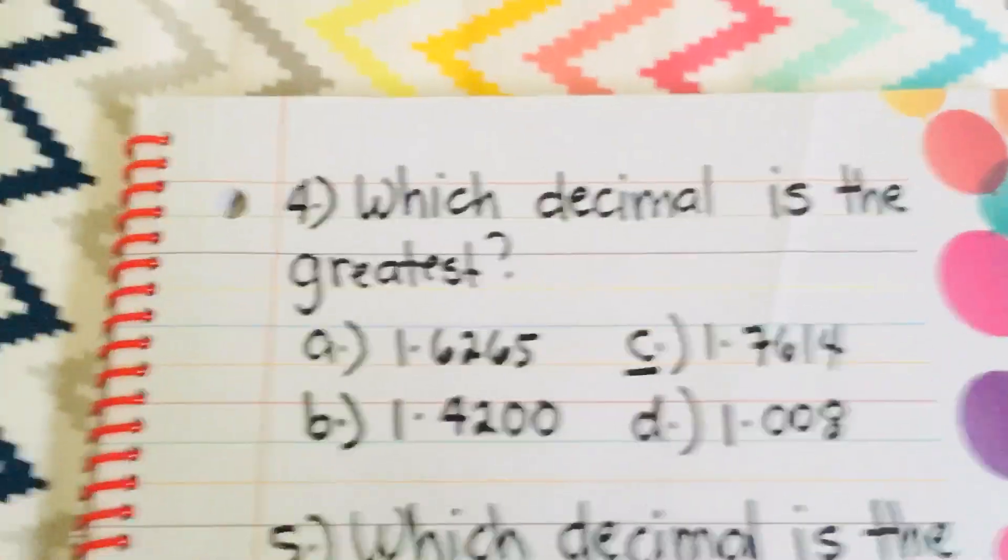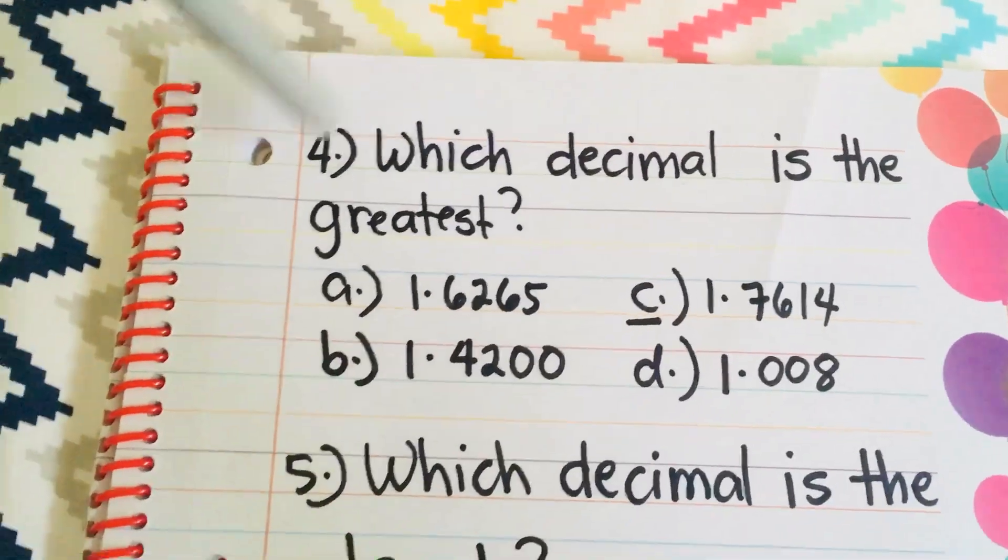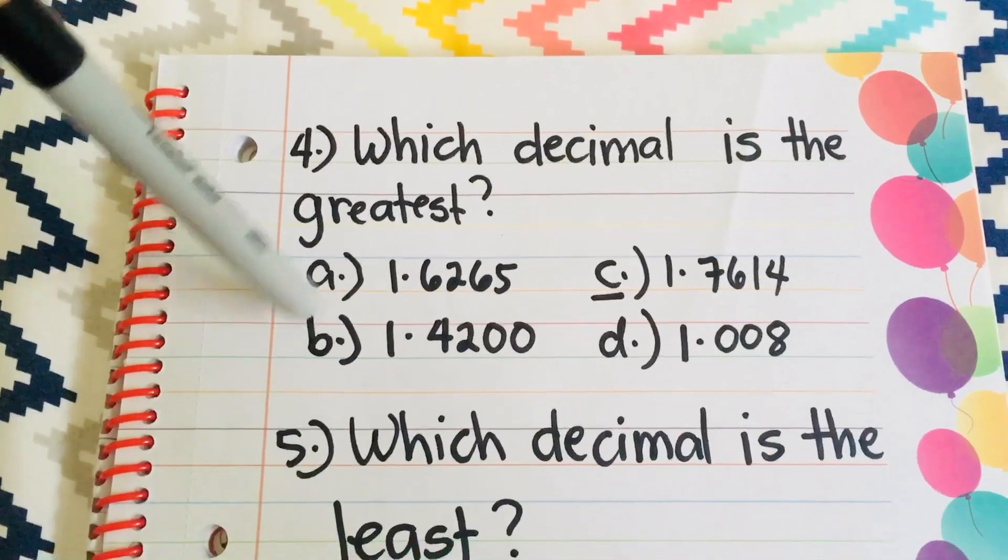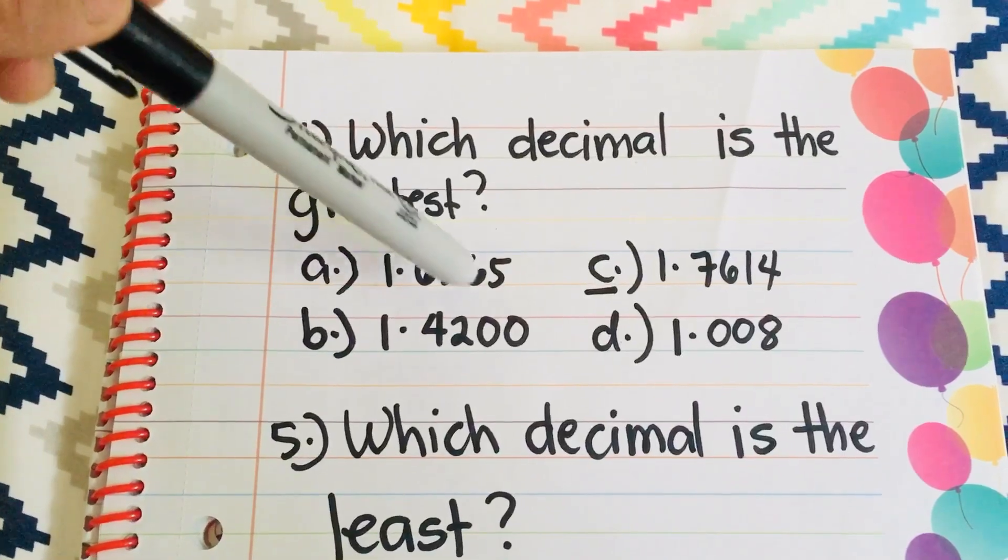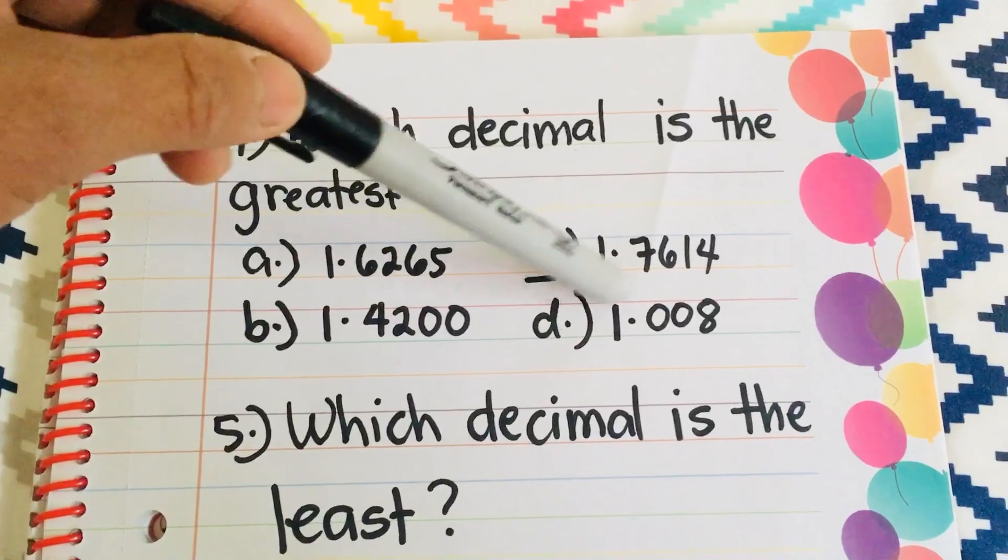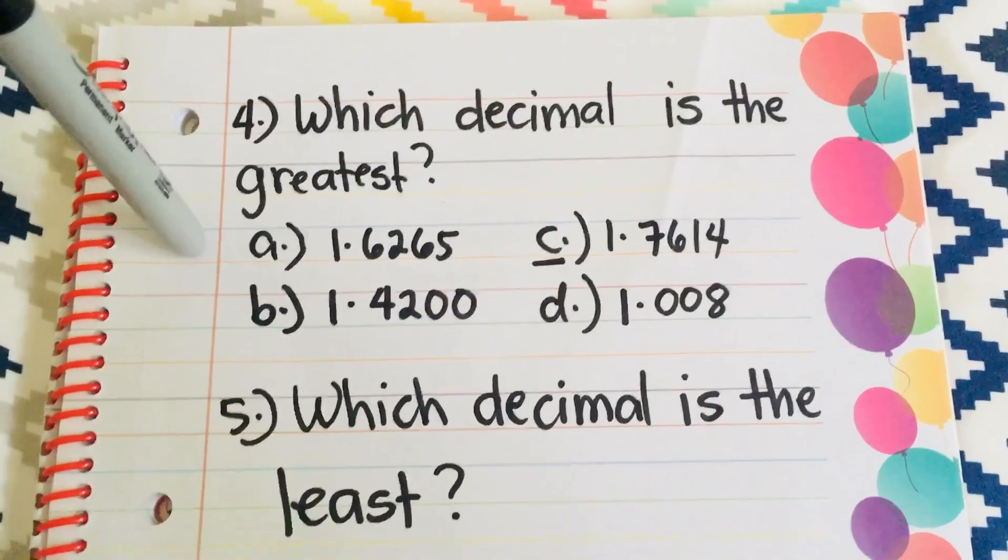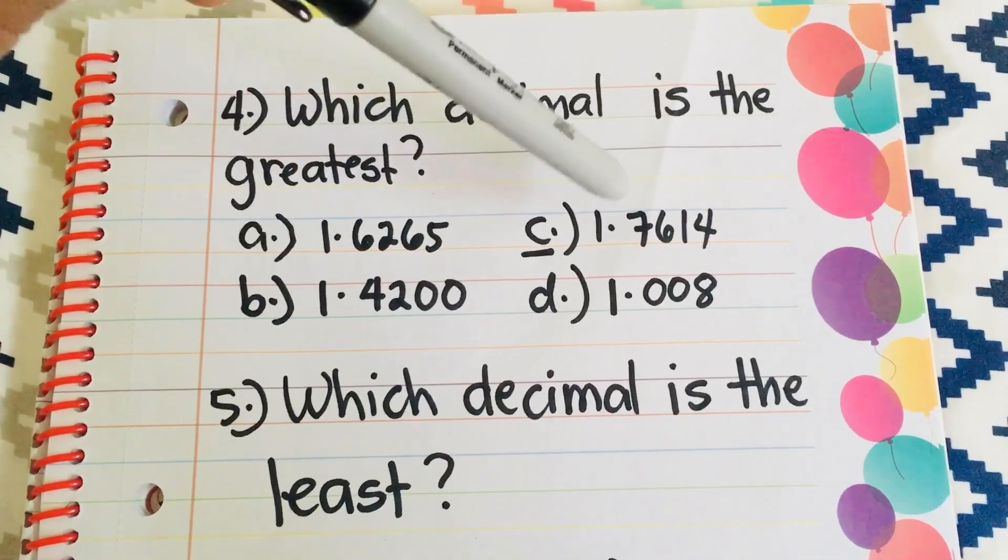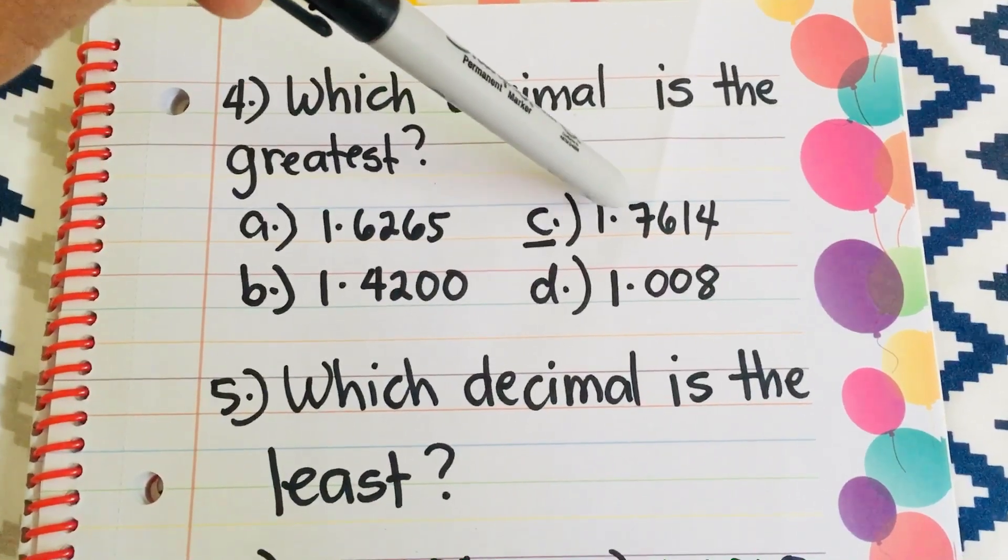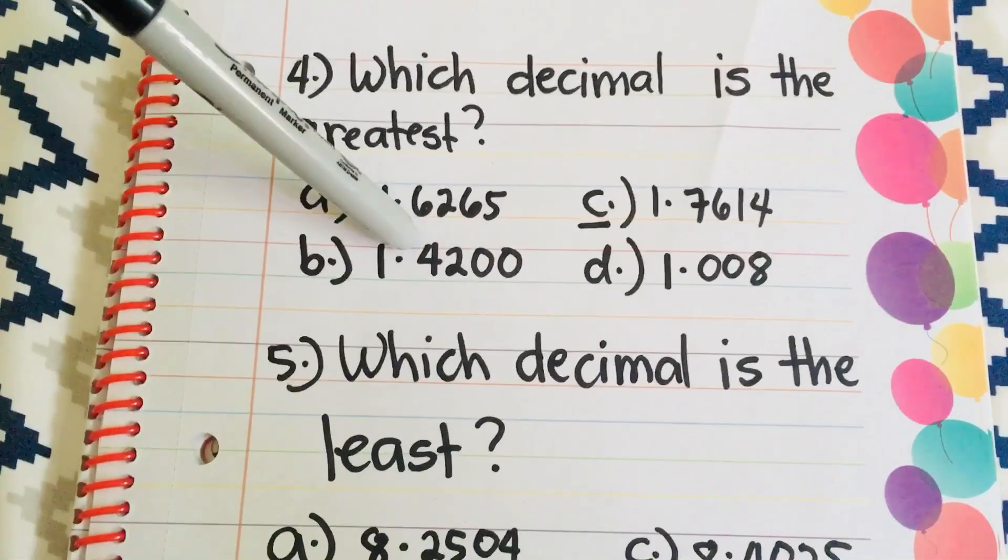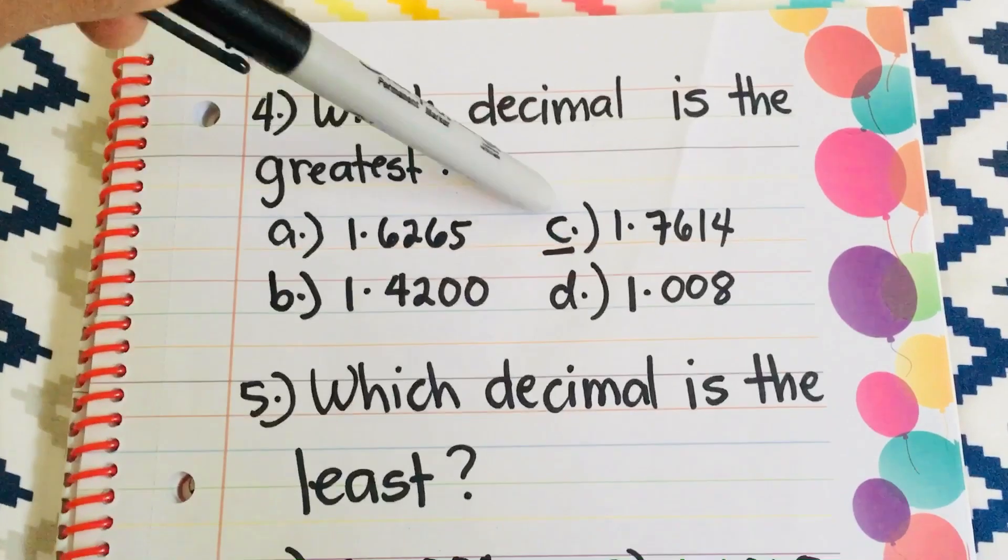Then, number 4 question. Which decimal is the greatest? Is it A, 1.6265, or B, 1.4200, C, 1.7614, or D, 1.008? Obviously, the greatest number is 1.7614, because next to the decimal point is 7, whereas the rest has 0, 4, and 6. So, the answer is C.